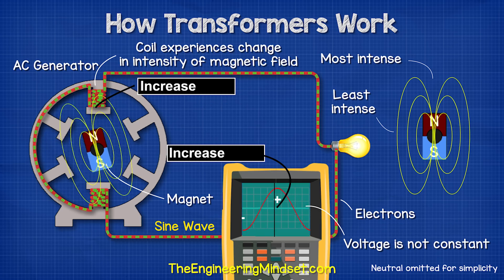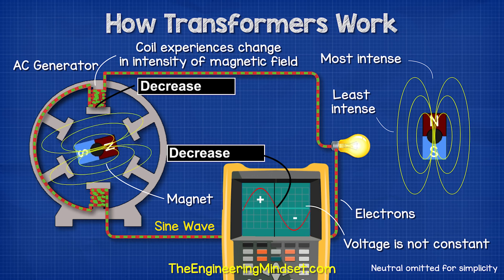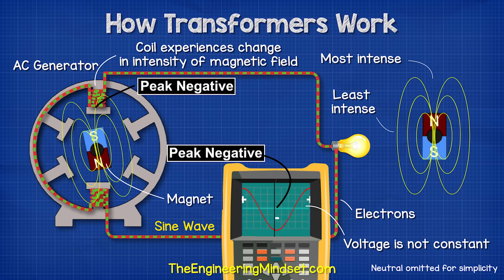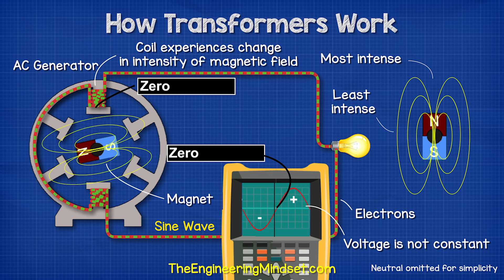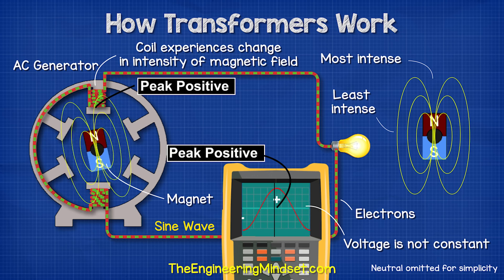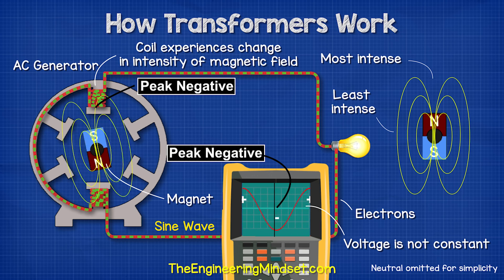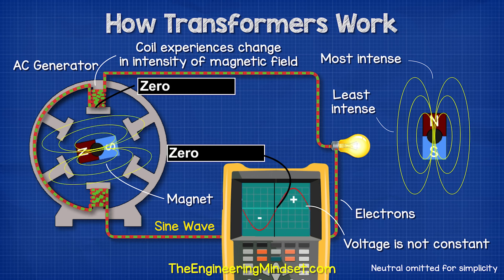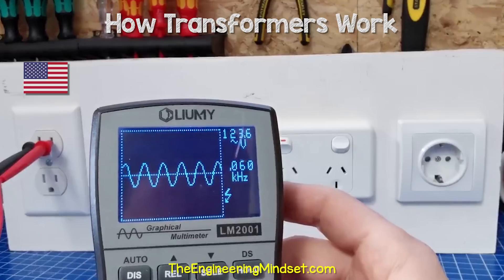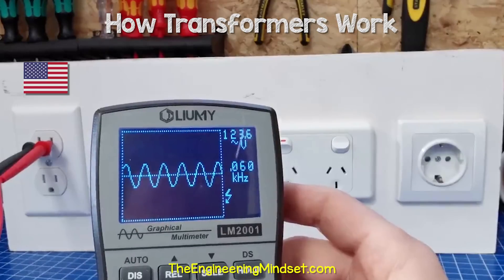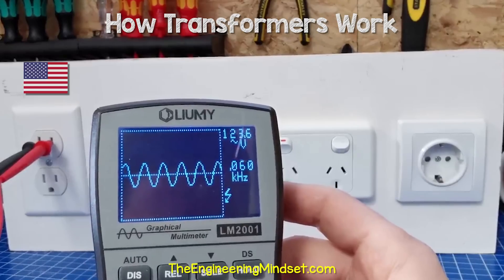So the magnetic field is therefore constantly reversing. The voltage is going to vary between its maximum and minimum values because of this. That's why we see a sine wave pattern if we connect an oscilloscope to a power outlet.